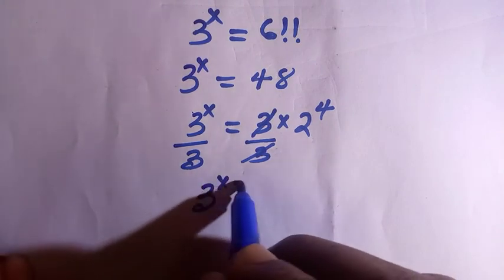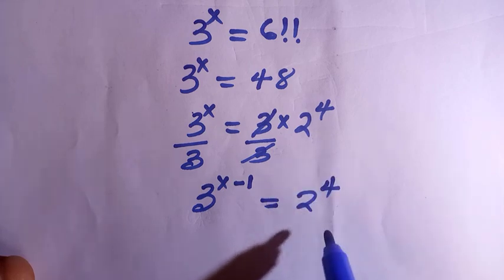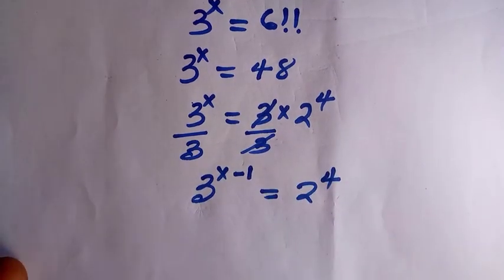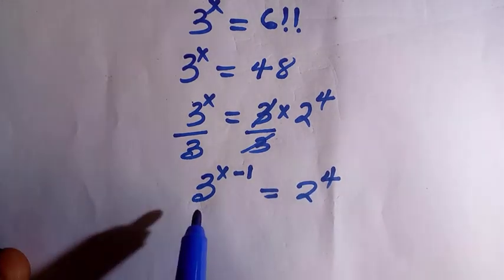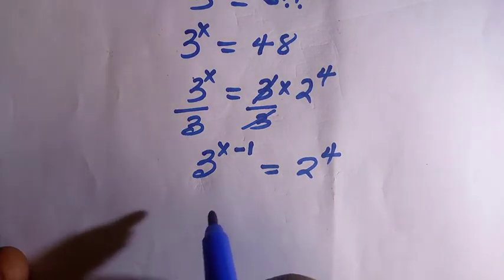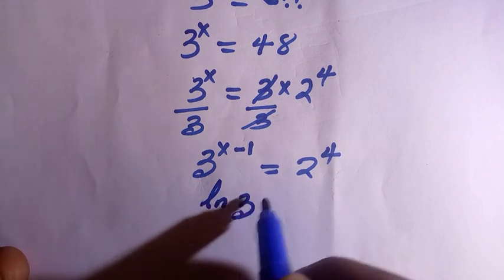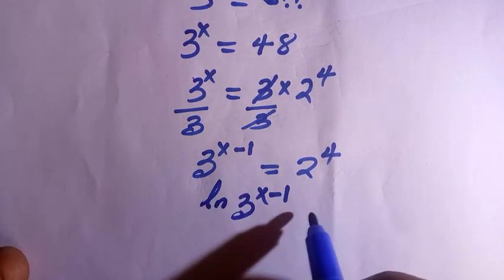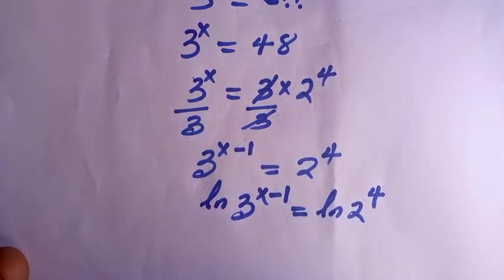So the next thing I am going to do here is introduce logarithm to cut the method short and get the quick answer. We have ln of 3 to the power of x minus 1 equals to ln 2 raised to the power of 4.